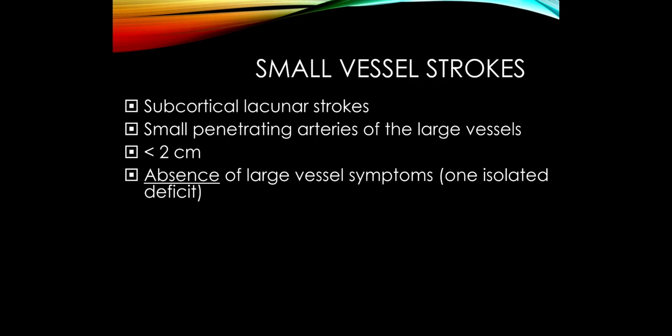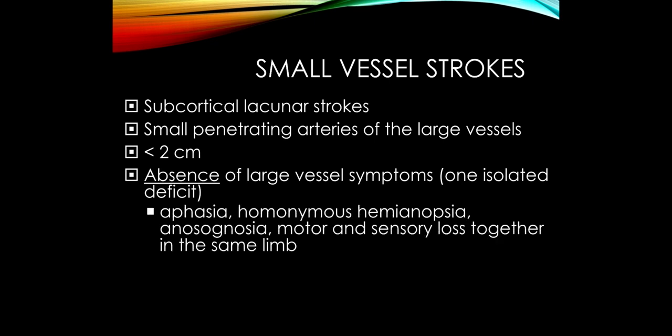Small vessel strokes, or lacunar strokes, are very common. These are due to occlusion of small penetrating arteries like the lenticulostriate or the thalamogeniculate that we talked about previously. The strokes are smaller than two centimeters, and the rule of thumb is that patients have one specific deficit, which can be quite profound, but they don't have the whole multitude of problems that someone with a large vessel stroke will have.